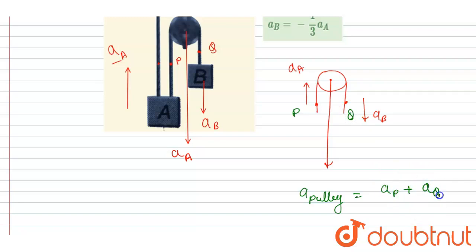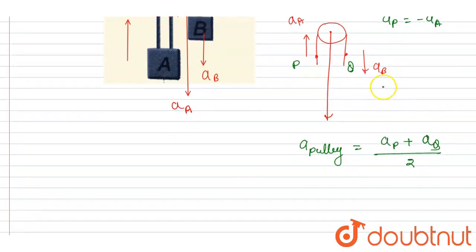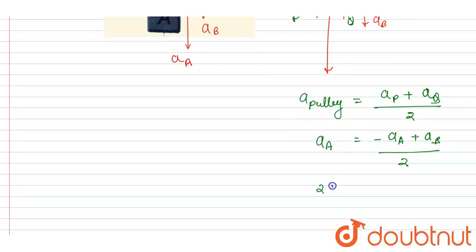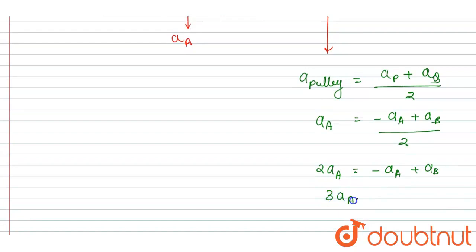That is (aP + aQ) / 2. The downward acceleration of point P is -aA (since it moves upward) and the downward acceleration of point Q is aB. This equals the acceleration of the pulley, which is the same as the acceleration of block A in the downward direction. Solving this, I get the relation: 3aA = aB.